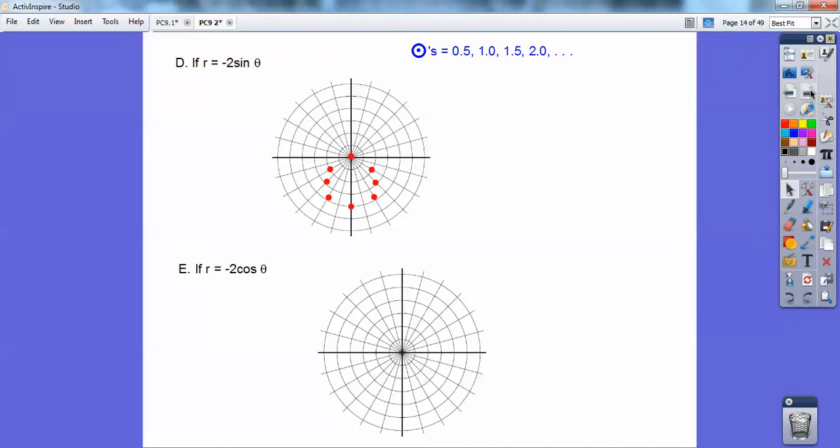So if I did r equals negative 2 sine of theta, it would just be an upside down circle, and if I did r equals negative 2 cosine, it's going to be over here.